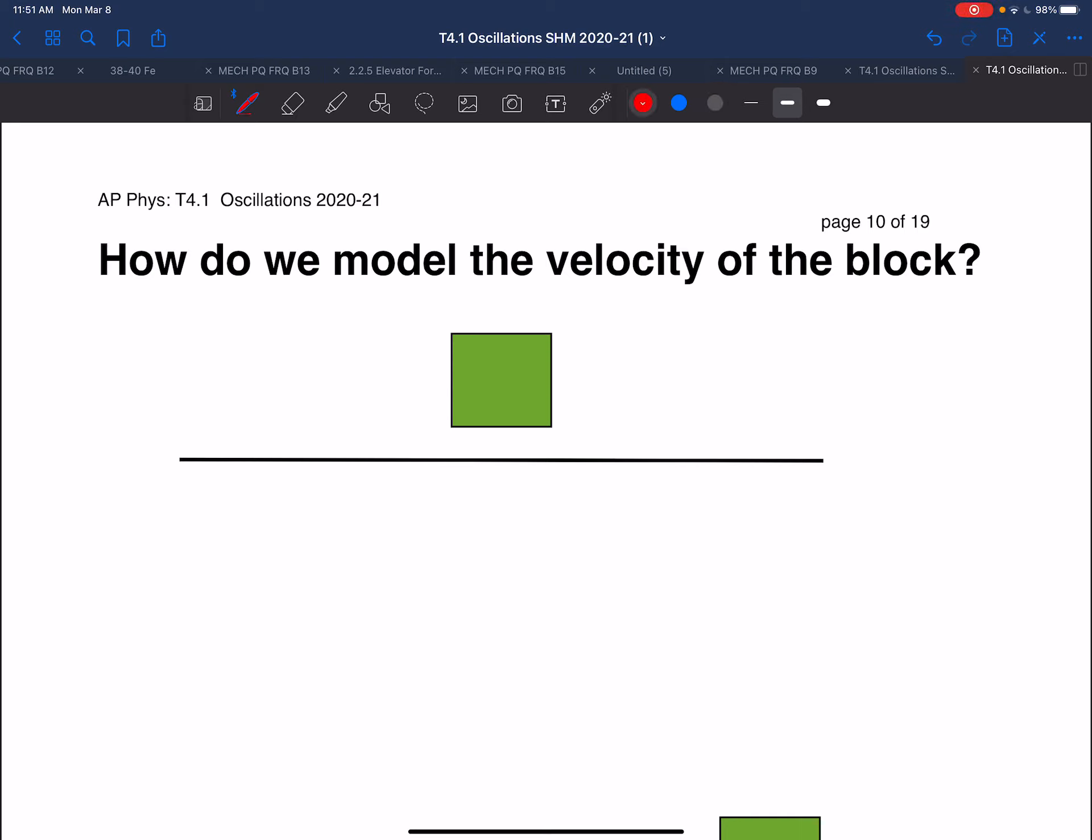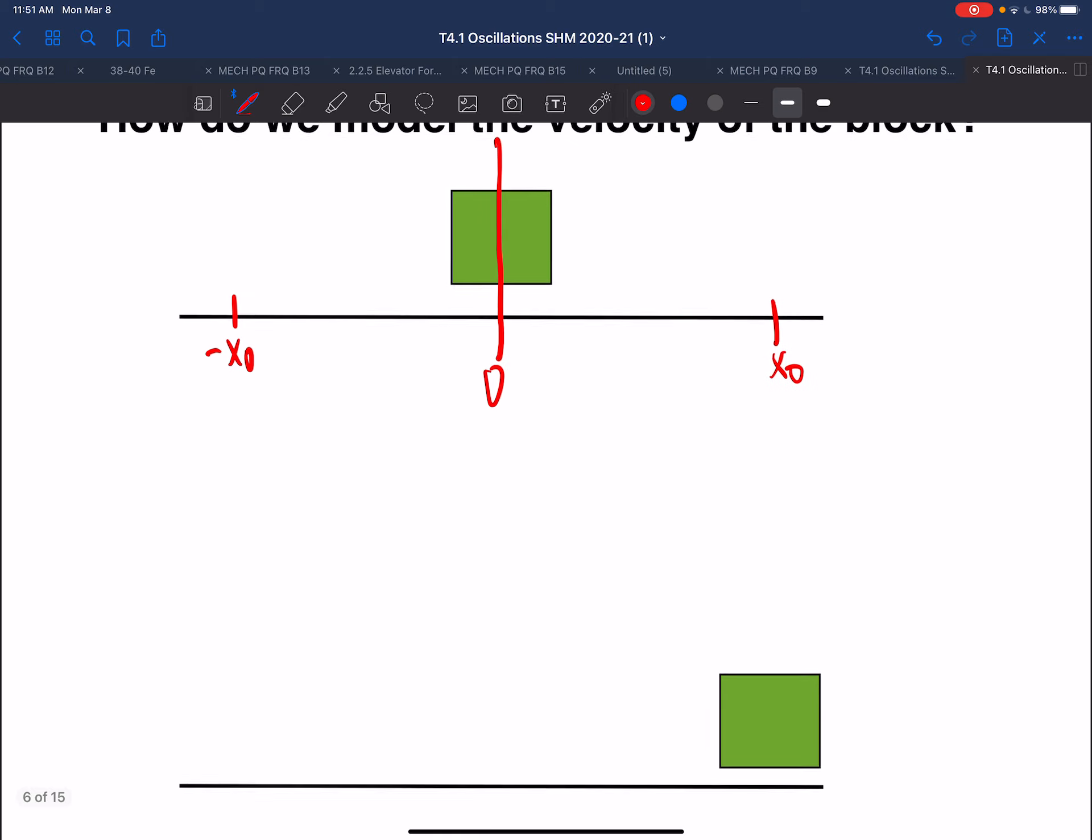Now, when it comes to the velocity, we have our equilibrium position, we have our x₀ and our minus x₀, meaning our maximum positions. And so now, when we pull our object all the way to one side, x₀, we have our equilibrium. When we get it all the way to its maximum position, x₀, and we release it, the instant before we release it, the velocity is 0.